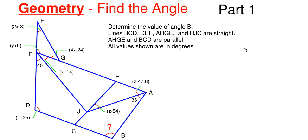Today's video we're going to be covering geometry and we're going to be finding an angle of a particular shape. This will be the first part of this series. What we have going on here is this weird shape, and we have to determine the angle of B down here, labeled with a question mark.